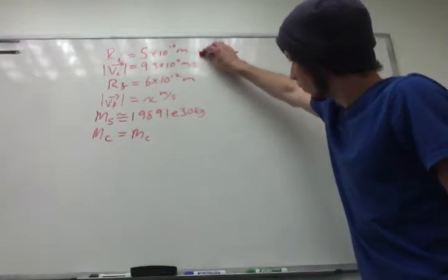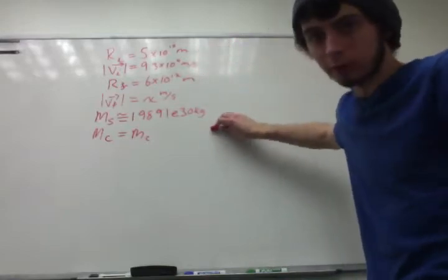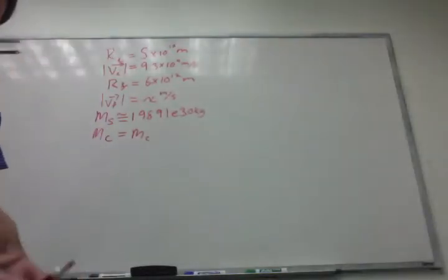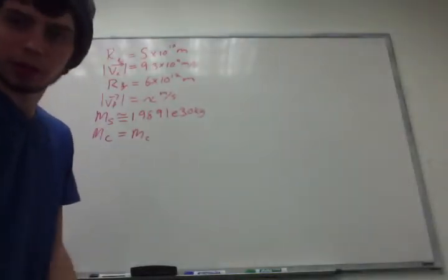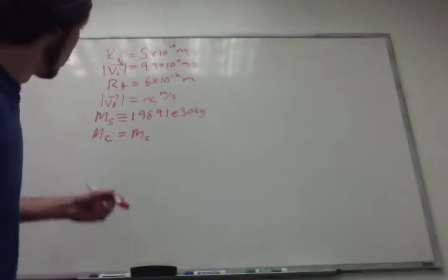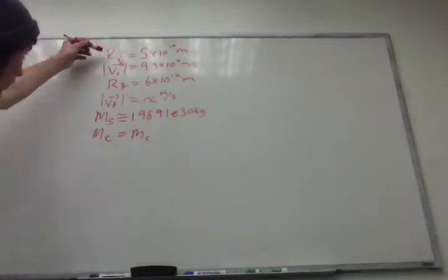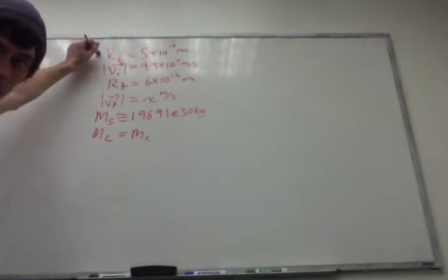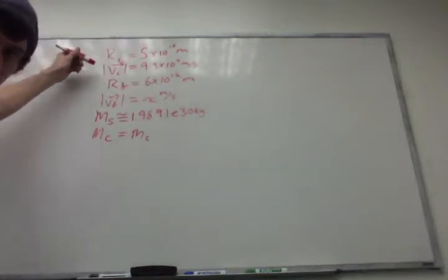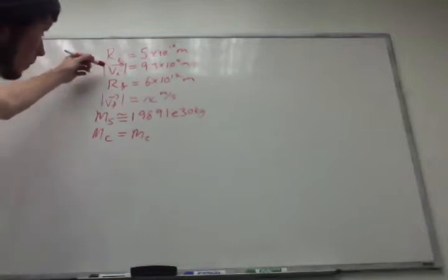All right, so here's all the physical quantities we want to take into consideration. For the initial point, we're going to consider the closest the comet gets to the sun. The radius at that point is provided here at 5×10^10. The initial velocity at that point is given here.